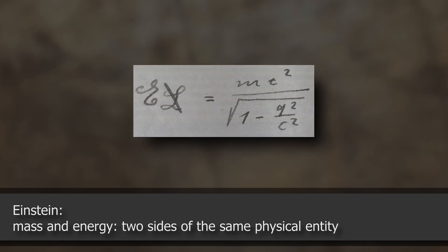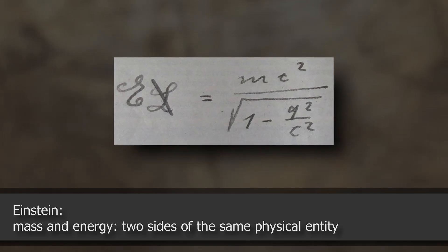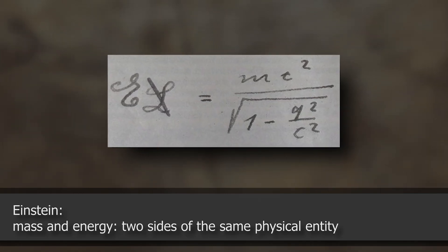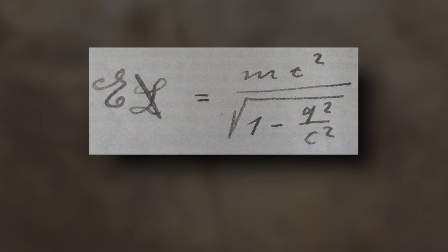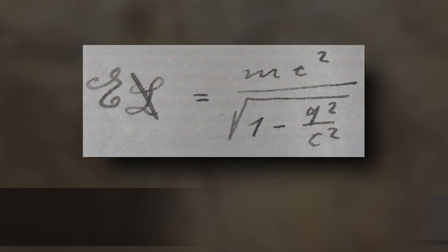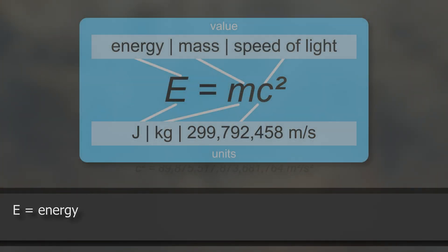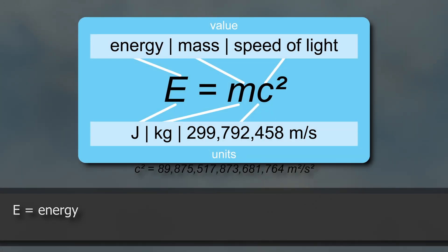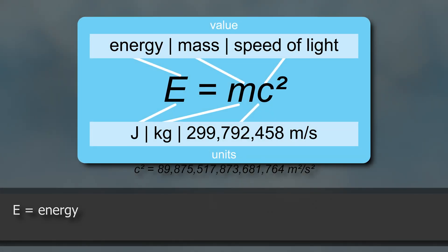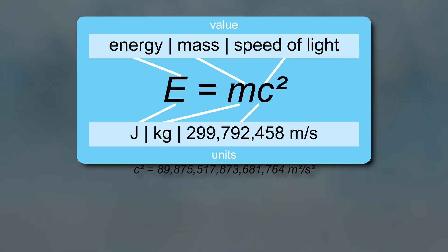However, Einstein's famous formula shows that mass and energy are two sides of the same physical entity that may be converted into one another. The statement consists of just three parts. E or energy is the total value on one side of the equation and it stands for the system's overall energy.